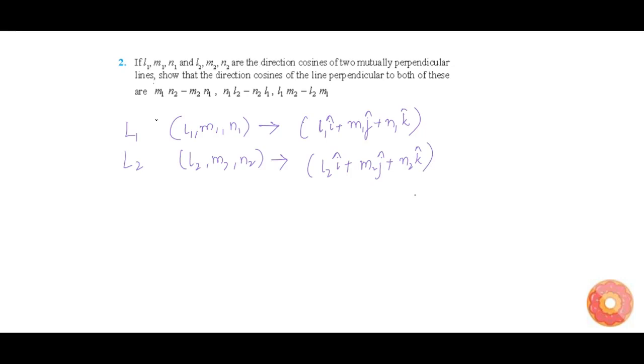It is given that line L1 and L2 are perpendicular. Now, if a line L3 is perpendicular to both these lines, then the vector parallel to line L3 must be perpendicular to both line L1 and line L2.